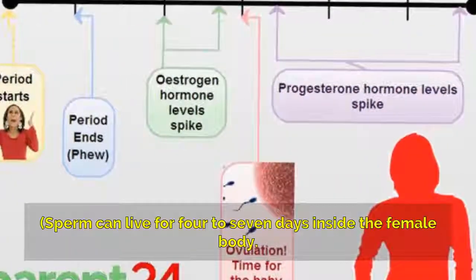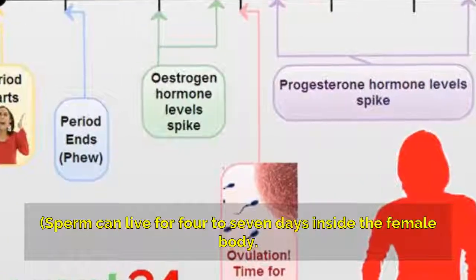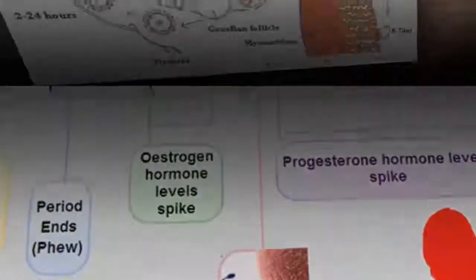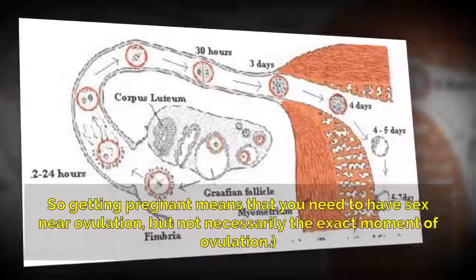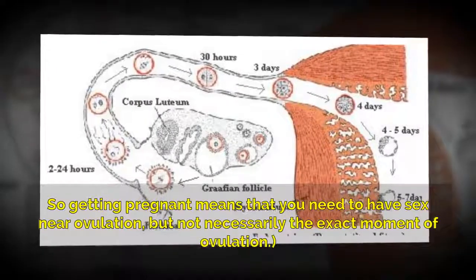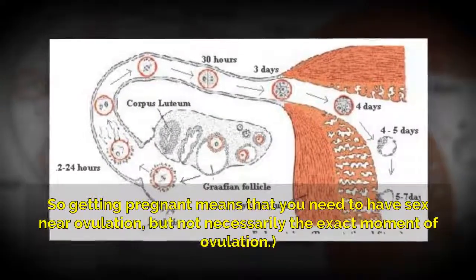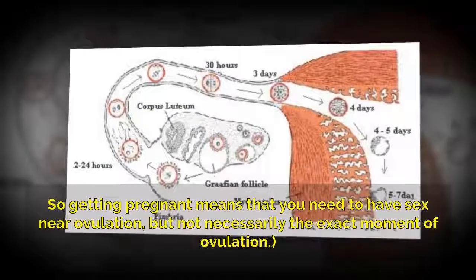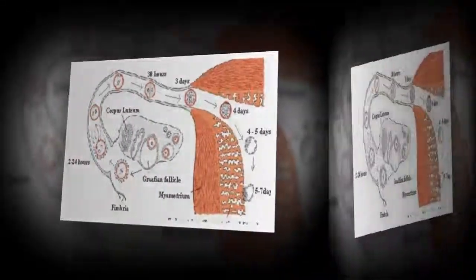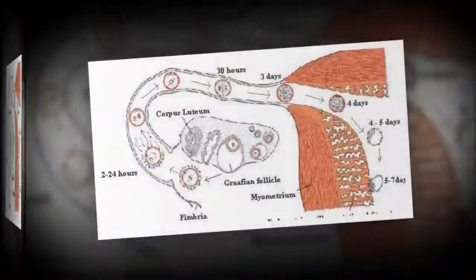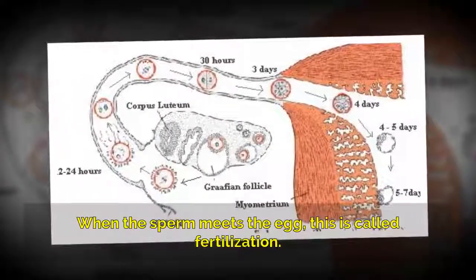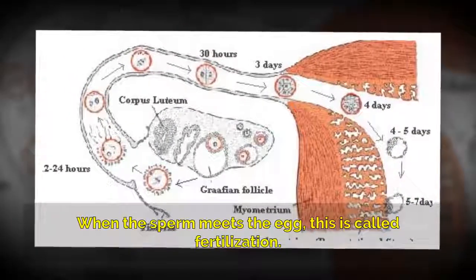Sperm can live for 4 to 7 days inside the female body. So getting pregnant means that you need to have sex near ovulation, but not necessarily the exact moment of ovulation. When the sperm meets the egg, this is called fertilization.